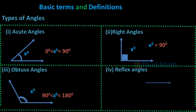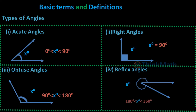4. Reflex Angle: An angle x, where 180° < x° < 360°, is called a reflex angle. An angle of 0° is called a zero angle. An angle of 360° is called a complete angle.